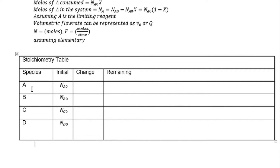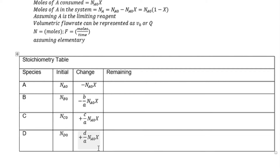For reactant A, we have N with subscript NAO. For B, we have N with subscript NBO respectively. For C and D, we know our initials, which are represented using variables. For the change, we can represent it in this format here.